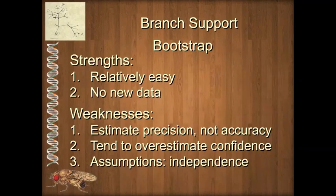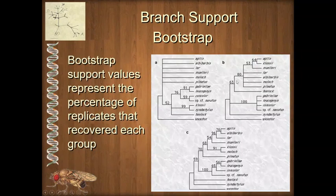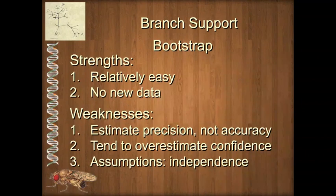The strengths of bootstrap are that it's really easy to do and you don't have to get any brand new data. But sometimes that leads to over-reliance on it and people not really understanding what it is. Like all of these branch support measures, it's really an estimate of precision, not accuracy. Experiments on simulated data have shown that bootstrap tends to overestimate branch confidence — values tend to be inflated, particularly as data sets get bigger. We are also assuming that every single character we sample is independent, which may not be true if some characters are dependent on one another.